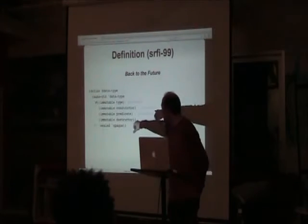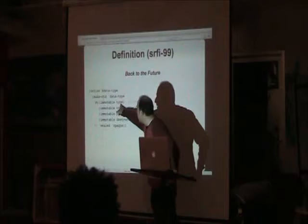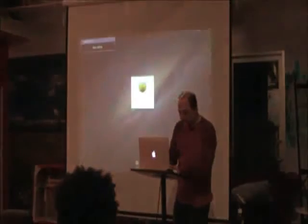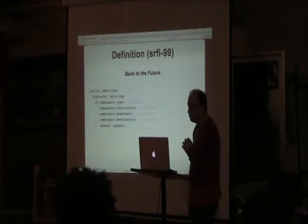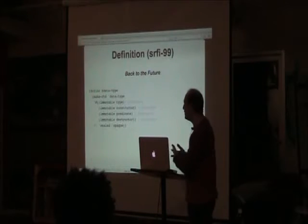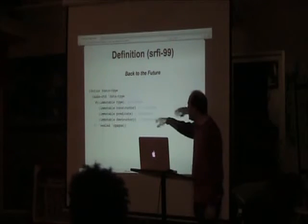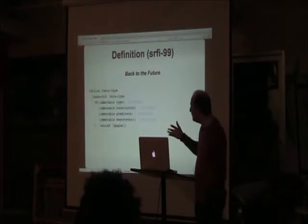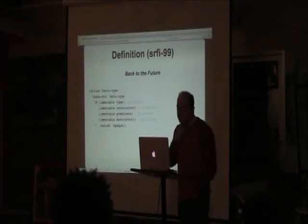Concretely, a SRFI-99 record is basically a vector. The hash notation indicates it's a vector literal. make-rtd creates a record type descriptor — the type object. From that descriptor you can create constructors, predicates, and other procedures for that record type.